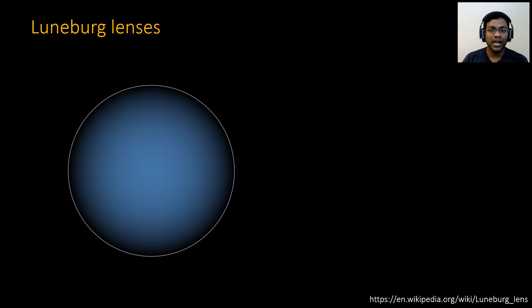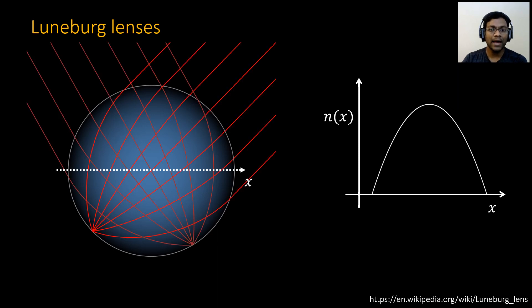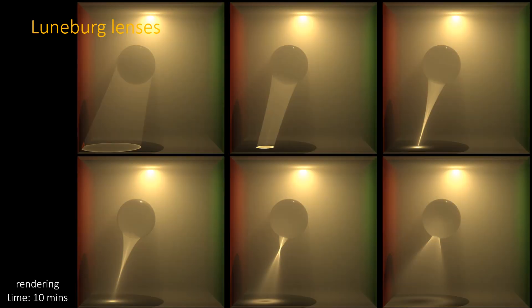Lunenberg lenses are a special kind of lenses that are spherical in shape and have a radially decreasing refractive index profile as shown in the right. Standard Lunenberg lenses focus a parallel beam of light to the surface of the lens. By changing the refractive index profile, we can control the power of the lens. We placed a Lunenberg lens inside a Cornell box scene filled with fog and with a point emitter on the roof. I am showing the light focusing behavior and volumetric caustics for various Lunenberg lenses with increasing power as we go from left to right.